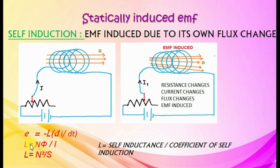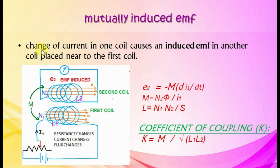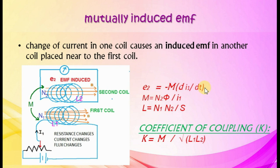Mutually induced EMF: change of current in one coil causes an induced EMF in a nearby coil. L1 and L2 are self-inductances of the two coils, M is mutual inductance, N1 and N2 are turns. Induced EMF in second coil: E2 equals minus M di1 by dt. M equals N2 phi by I1. L equals N1 N2 by S. Coefficient of coupling K equals M by root of L1 times L2.